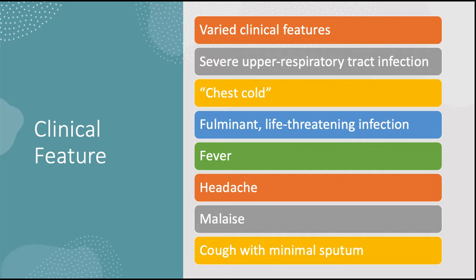The pneumococcus is the most common cause of community-acquired bacterial pneumonia and usually has a lobar pattern of involvement. Morphologically, lobar pneumonias evolve through four stages: congestion, red hepatization, grey hepatization, and resolution. Viral pneumonias are characterized by respiratory distress out of proportion to clinical and radiological signs, and by inflammation predominantly confined to the alveolar septum with generally clear alveoli. Common causes of viral pneumonia include influenza A and B, respiratory syncytial virus, human metapneumovirus, parainfluenza virus, and adenovirus.